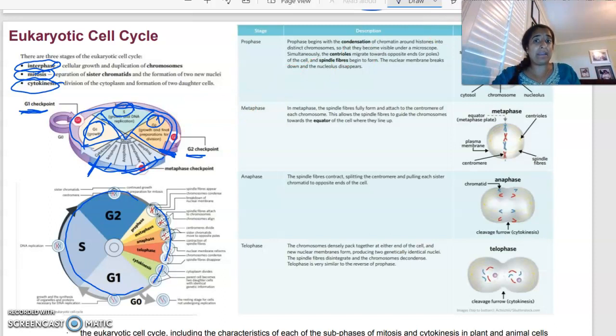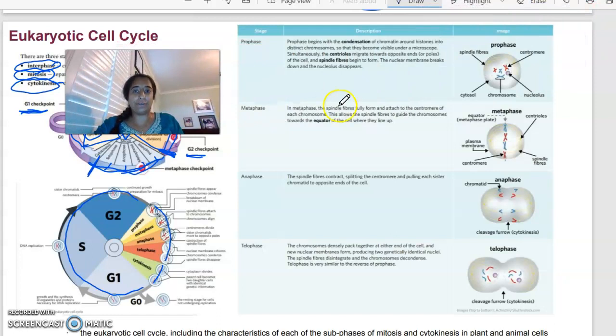In terms of what's actually happening in mitosis is the complex part that we're going to look at. The first stage, we call it prophase. Prophase is basically where all of your chromatin is going to condense into distinct chromosomes. And they can, at this point, become visible under a microscope. Centrioles are going to migrate towards opposite ends. And we are going to have what we call spindle fibres forming. These spindle fibres are these yellow sections, which are going to be really important in the next step.